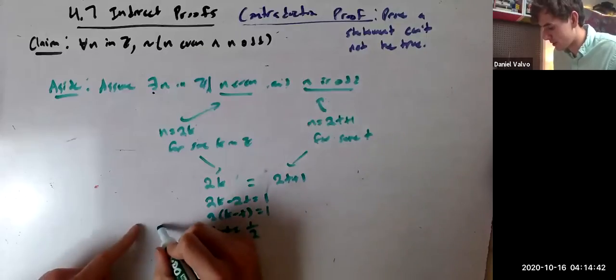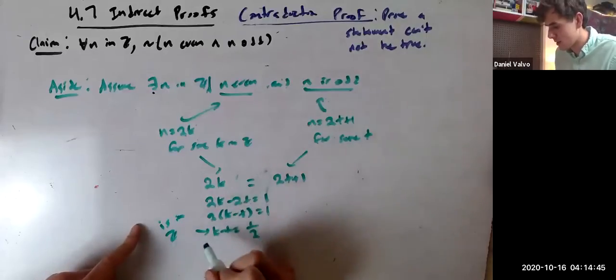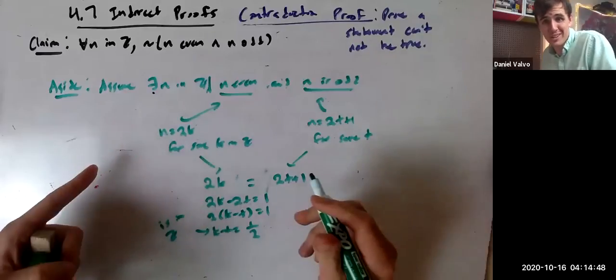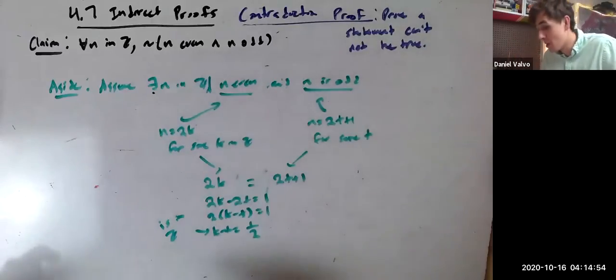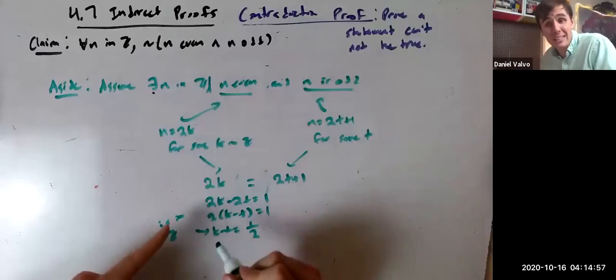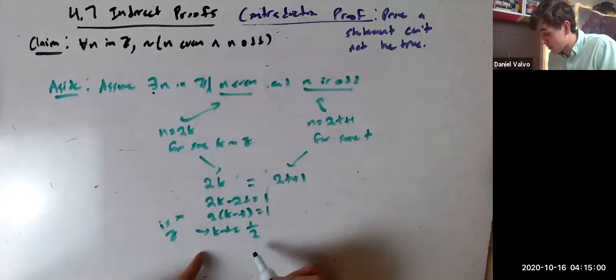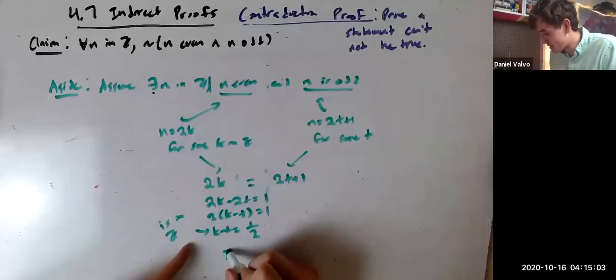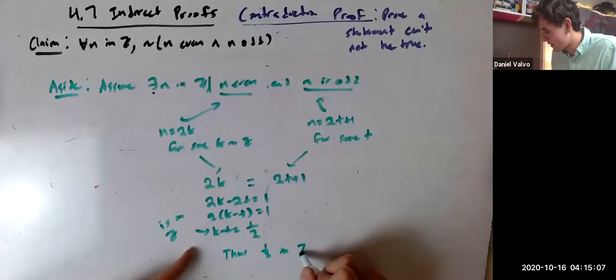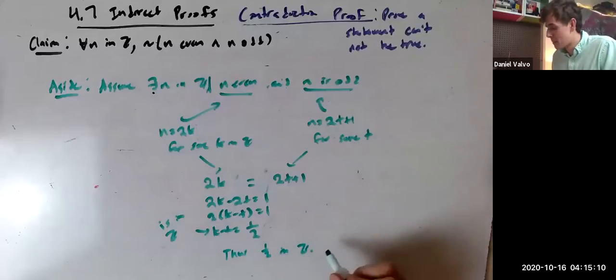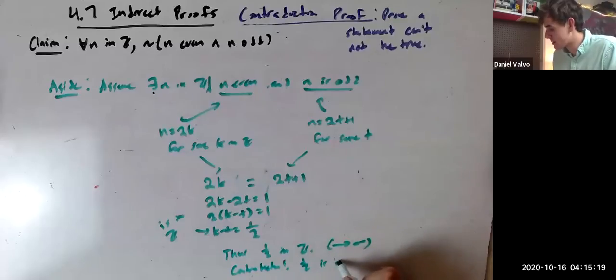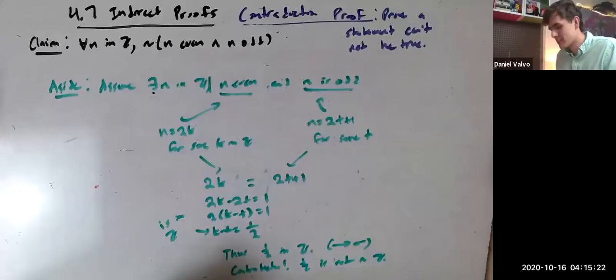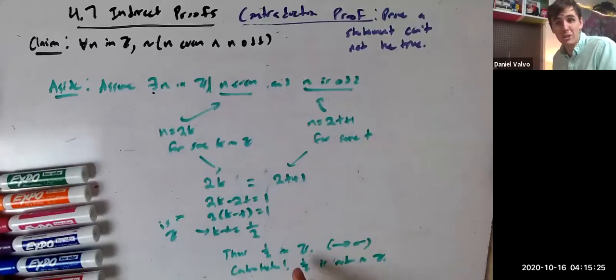Here's the problem. K minus T is an integer because K is an integer and T is an integer. The integers are closed under addition, subtraction, and multiplication, not division, but they're closed under subtraction. So K minus T is an integer. But K minus T equals 1/2. So we're saying that 1/2 is an integer. But this is a contradiction. 1/2 is not in Z.